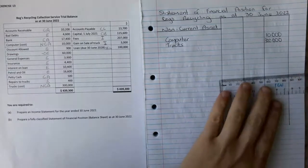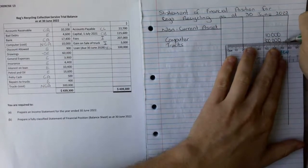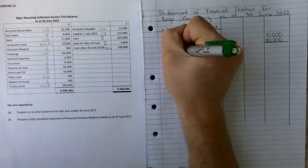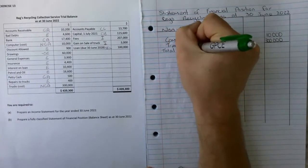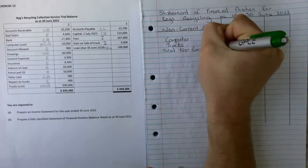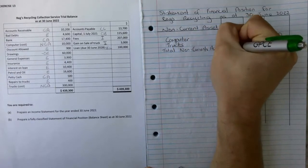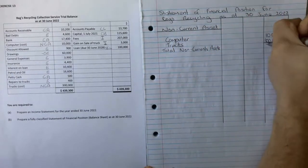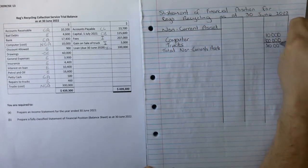Then obviously our other big one in this example are trucks and they are $300,000. As we can see here, that's going to be totaled. If we want to, we can write total non-current assets which equals $310,000.